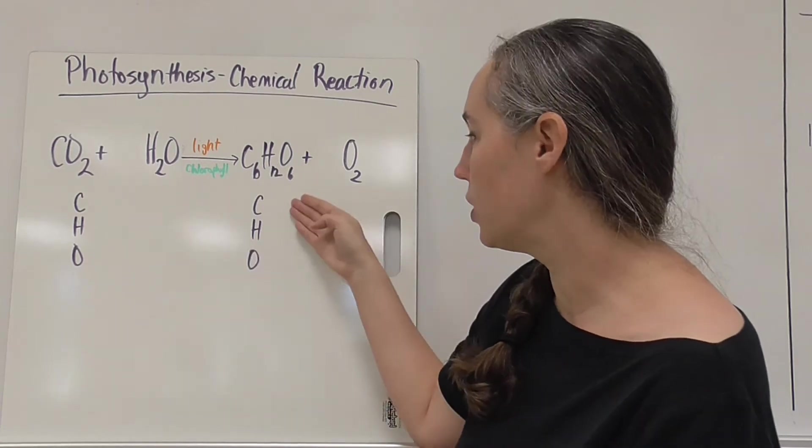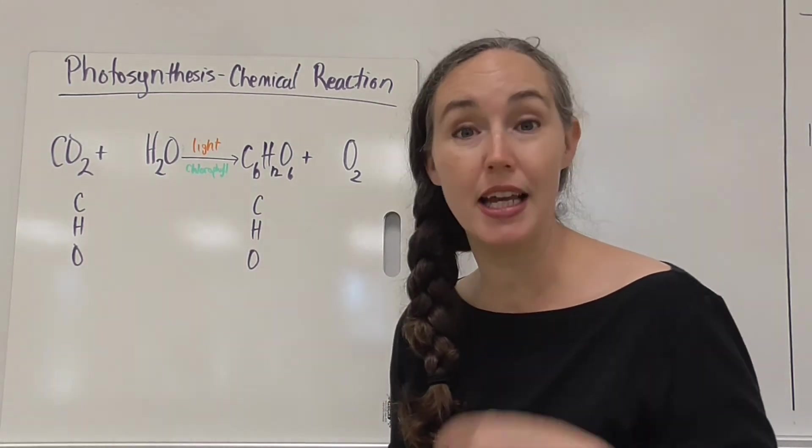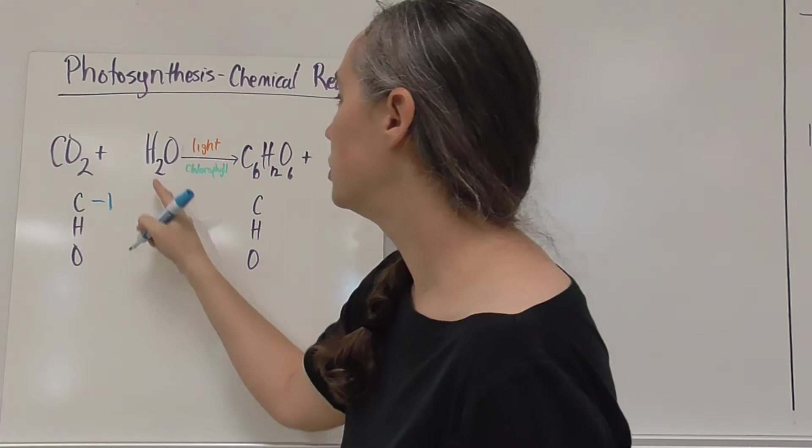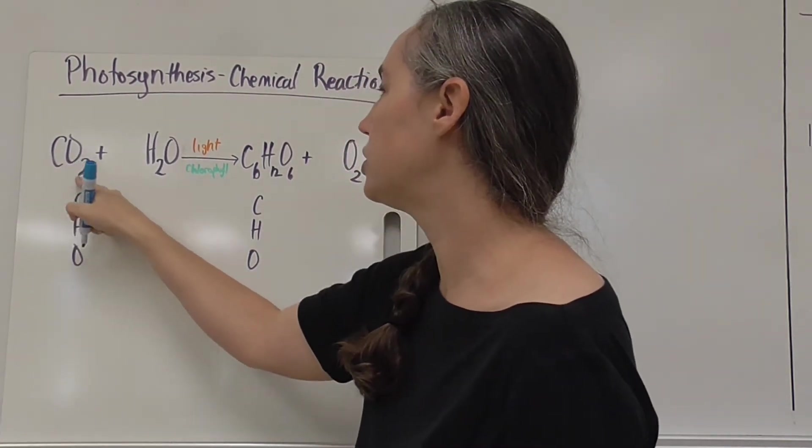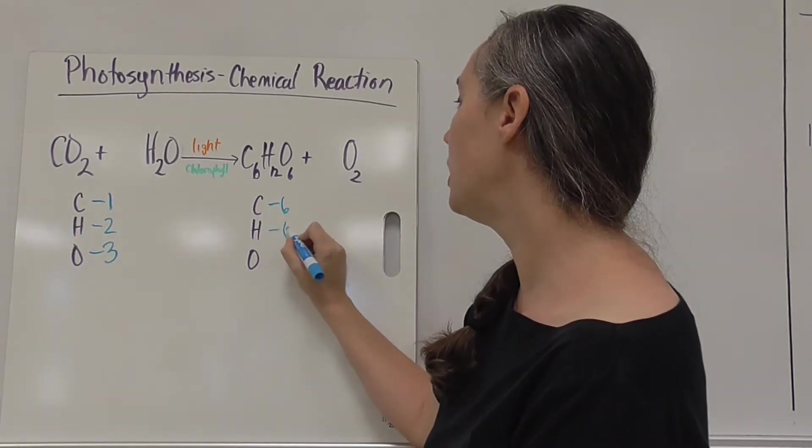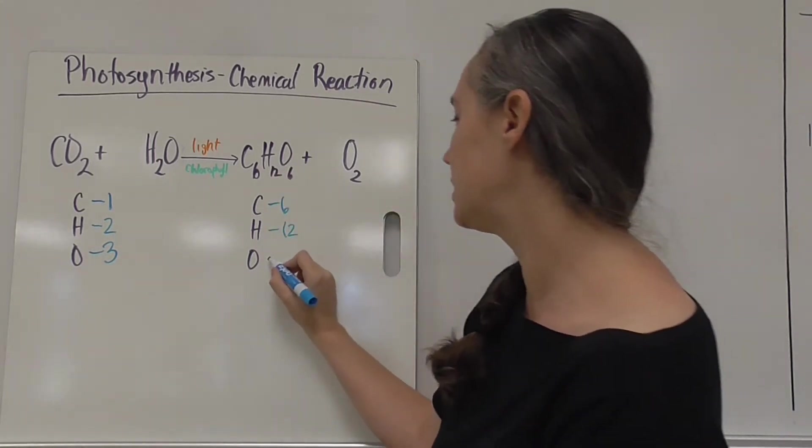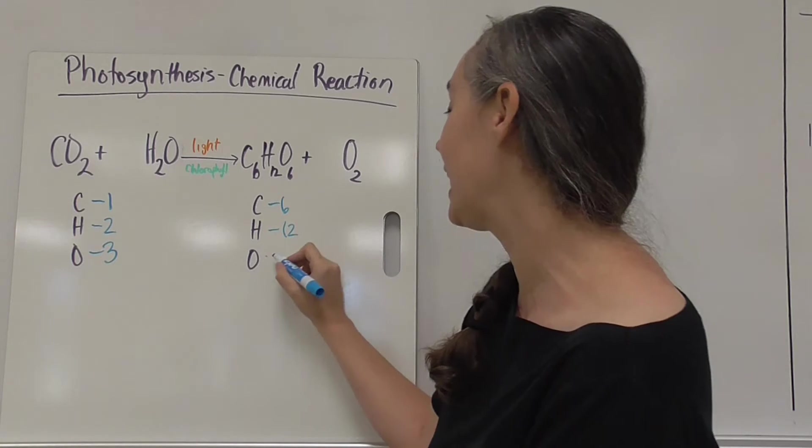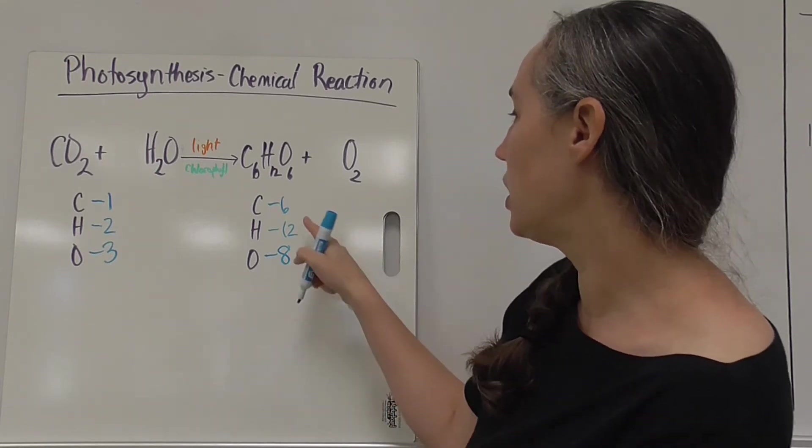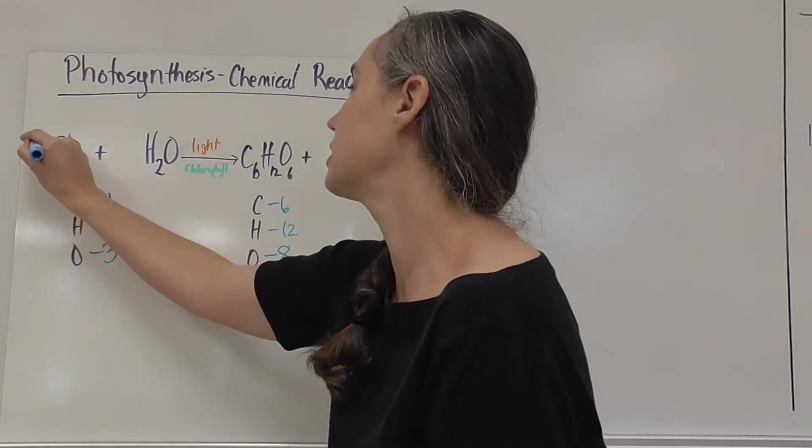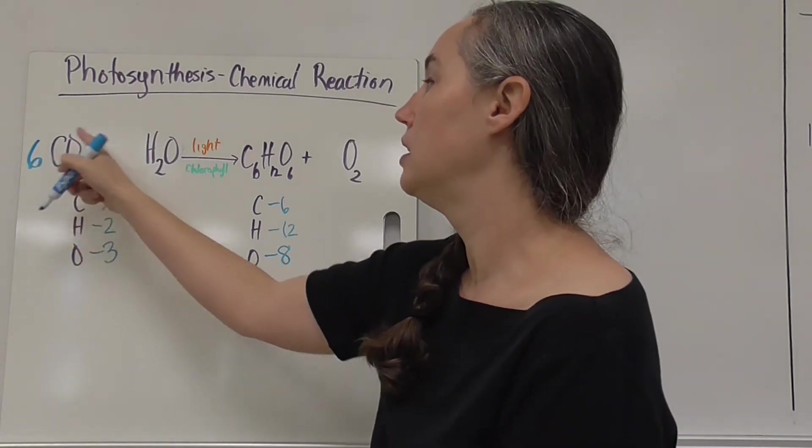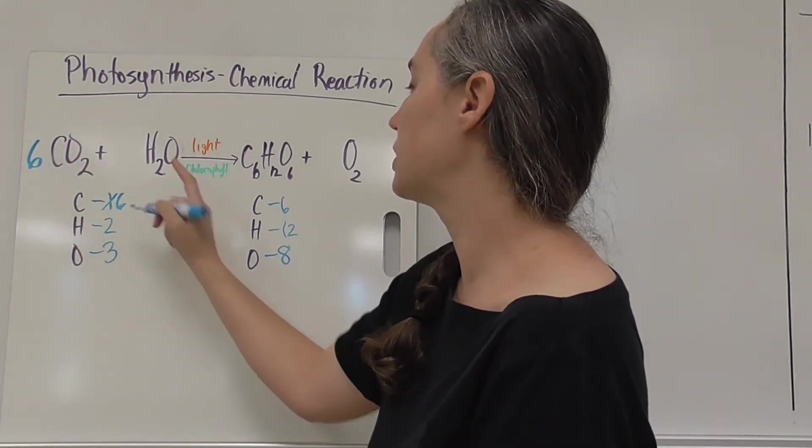We first list our elements on each side of the arrow: carbon, hydrogen, and oxygen, and count how many are on each side. So we've got one carbon, two hydrogens, and one, two, three oxygens on the reactant side. On the product side we have six carbons, 12 hydrogens, and six plus two is eight oxygens. One thing I see that's a quick and easy way to start off, if I have six carbons over here, I could add a six right here which now gives me six carbons but my oxygens increase as well. Six times two is 12 plus one right here is 13. My carbons are balanced.